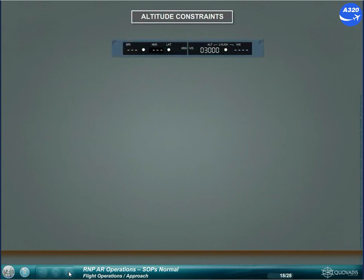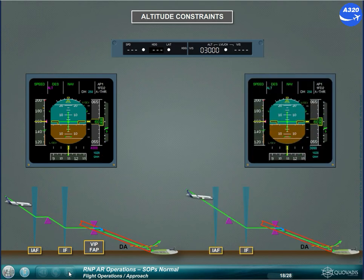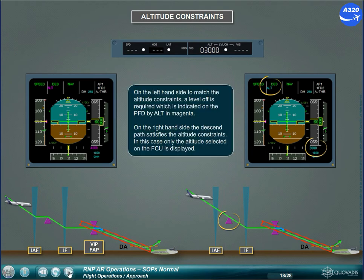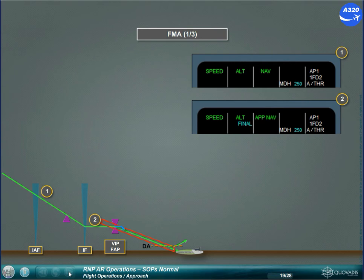On the left-hand side, to match the altitude constraints a level-off is required, which is indicated on the PFD by ALT in magenta. On the right-hand side, the descent path satisfies the altitude constraints; in this case only the altitude selected on the FCU is displayed. Manage the vertical profile to be at the vertical intercept point altitude before the VIP. Arm the approach so that final approach engages before or at the VIP, or at the FAP if no VIP is published.